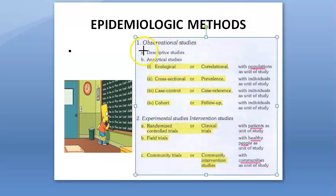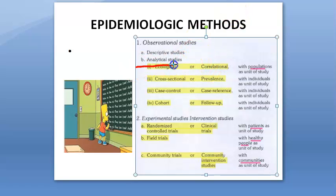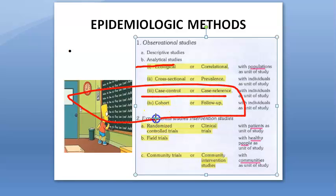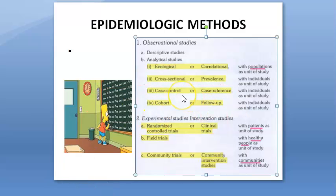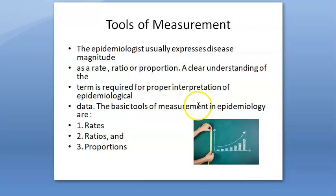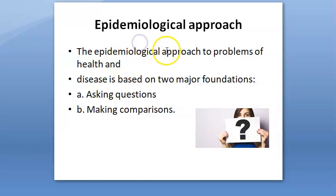In observational studies, you just observe. Observational studies include descriptive and analytical types. Under analytical, you have case-control studies, cohort studies, and more — all of these are important.